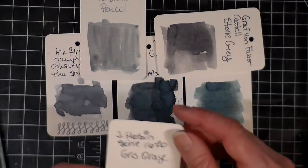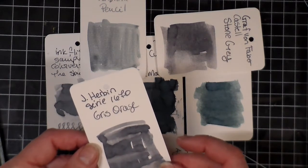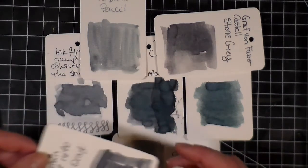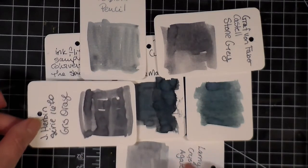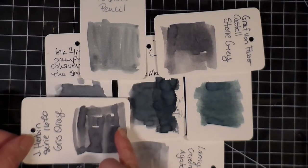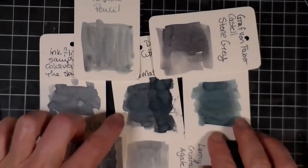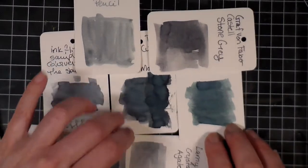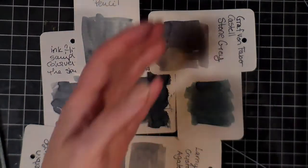And then I pulled out the J. Herbin Serie 1670 the Gris Orage and I thought it has some similar colors, but this one definitely has a lot more blue in it.